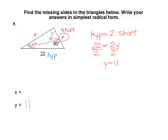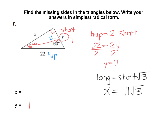The short leg is just half the hypotenuse. Now that we have the short leg, we can use that to find the long leg, because the long leg is just the short leg times the square root of 3. So my long leg x would be equal to 11 root 3. You can type 11 into the text box and then drag and drop one of the root 3s next to it so that your answer looks like 11 root 3.